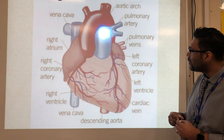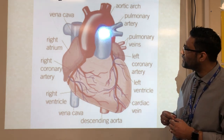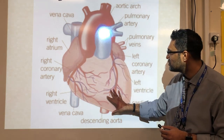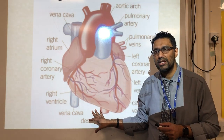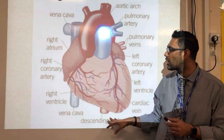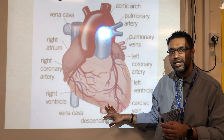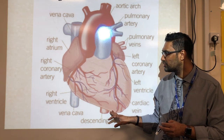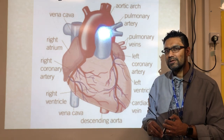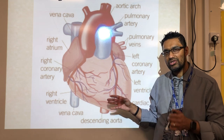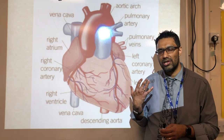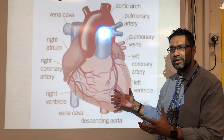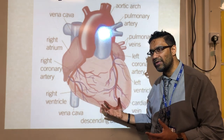From the outside, you've got blood vessels surrounding the outside of the heart. These blood vessels are called coronary arteries and veins, and they supply the heart with its own supply of blood — which sounds extremely strange because there's so much blood coming into your heart.